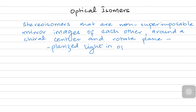Notice the key phrase: they rotate plane polarized light in opposite directions. Let's revise the definition — they are stereo isomers; the next important phrase is non-superimposable mirror images; and the third phrase is chiral center.